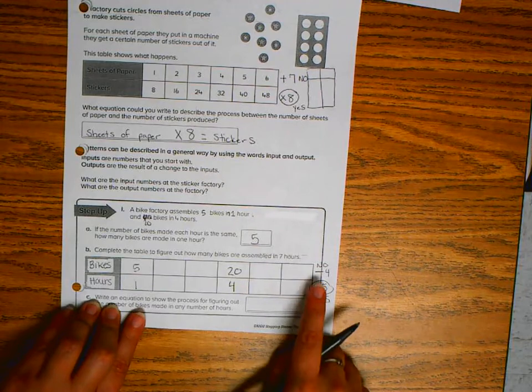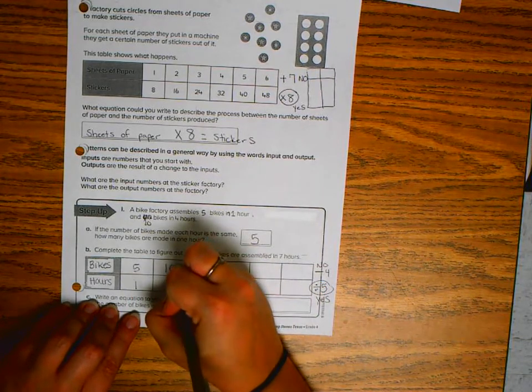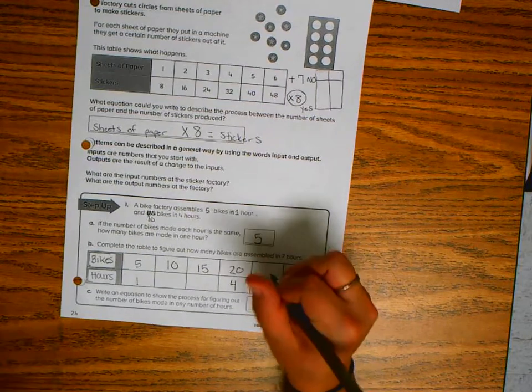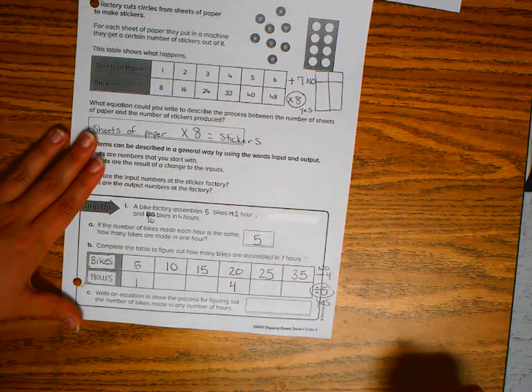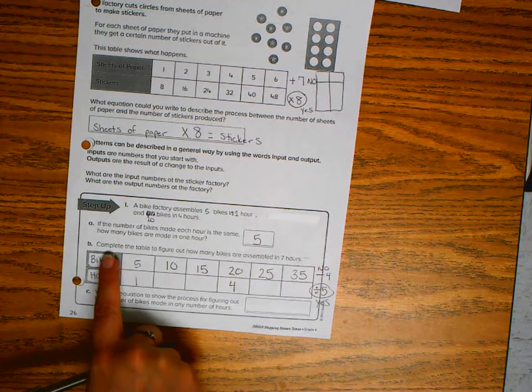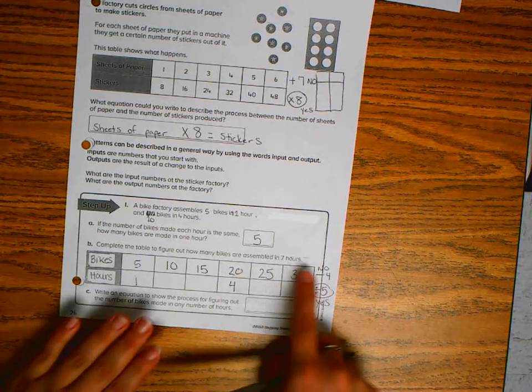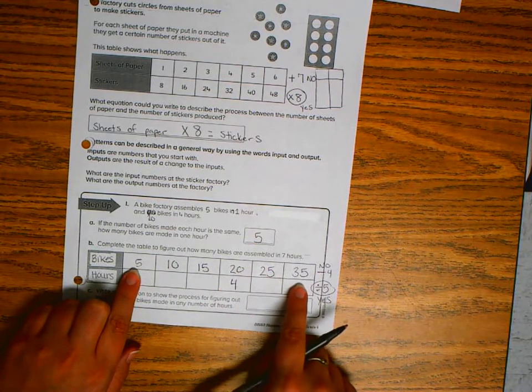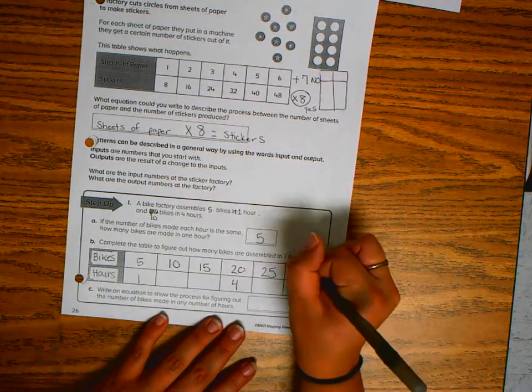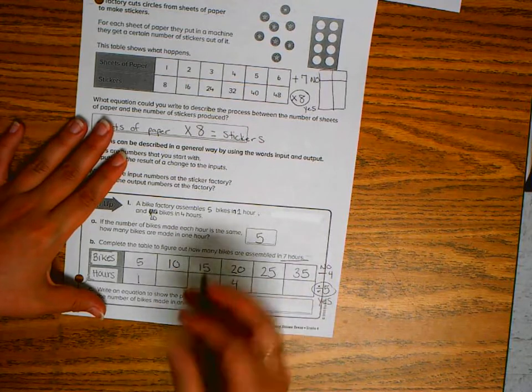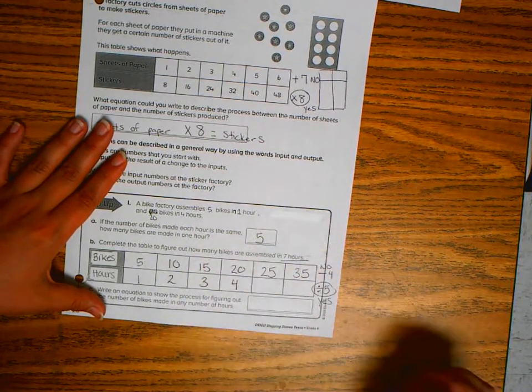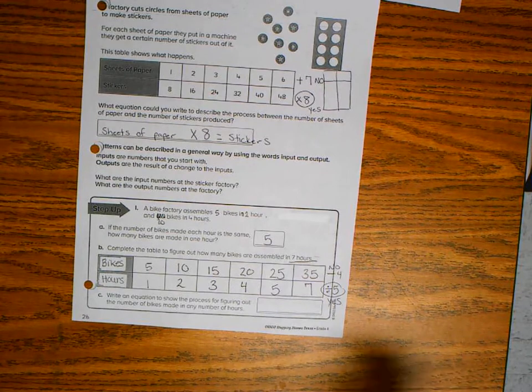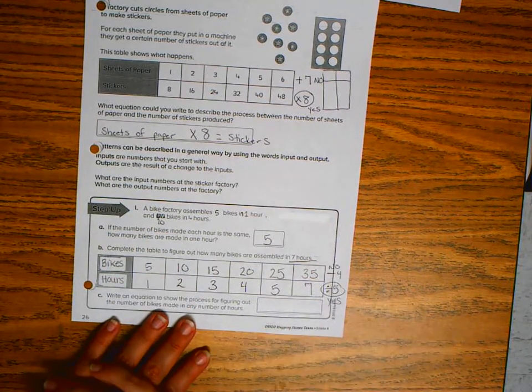Now I'm going to fill in my number of bikes: five, ten, fifteen, twenty, then twenty-five and thirty-five. We want to complete the table to figure out how many bikes are assembled in seven hours. I kept adding five across the top until I got towards the end. Ten divided by five is two, fifteen divided by five is three, twenty-five divided by five is five, and thirty-five divided by five is seven. So I know that in seven hours, thirty-five bikes were made.